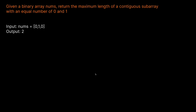For example, if we're given nums as zero and one, what are the two subarrays that are contiguous and have an equal number of zeros and ones? It's going to be zero-one and one-zero, right? And both of these actually have a length of two, which is our solution.